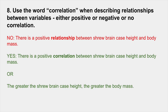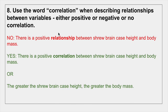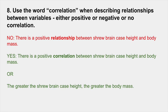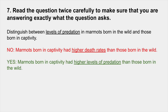Number 8: use the word 'correlation' when describing relationships between variables. It can be a positive correlation, a negative correlation, or no correlation. Don't use the term 'relationship' — use 'correlation,' or just spell out what the correlation is: for example, 'the greater the shrew brain case height, the greater the body mass.' That works perfectly well too.